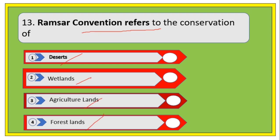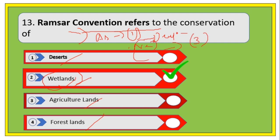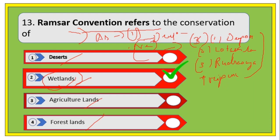Next question: the Ramsar Convention is concerned with the conservation of — options are deserts, wetlands, agricultural lands, and forest lands. The right answer is wetlands. In Assam, there is one Ramsar site: Deepor Beel. In Northeast India there are three: Deepor Beel (Assam), Loktak Lake (Manipur), and Rudrasagar (Tripura).